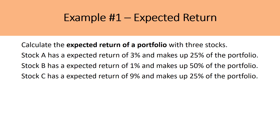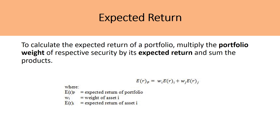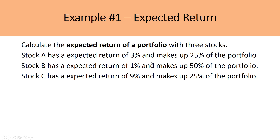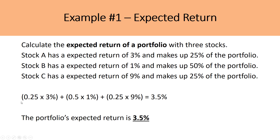Let's look at example one: calculate the expected return of a portfolio with three stocks. Stock A has an expected return of 3% and makes up 25% of the portfolio. Stock B has an expected return of 1% and makes up 50%. Stock C has an expected return of 9% and makes up 25%. We multiply each stock's weight by its expected return and sum the results. The portfolio's expected return is 3.5%. This is relatively simple, but the fundamental equation of multiplying weight by expected return is very important to remember.